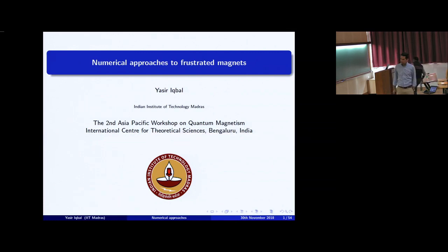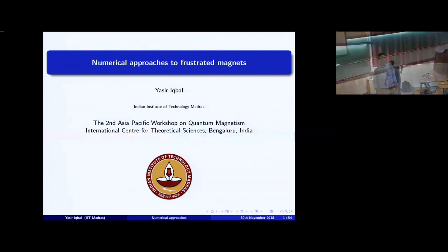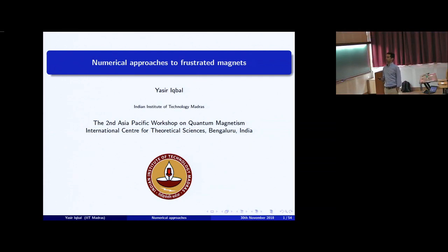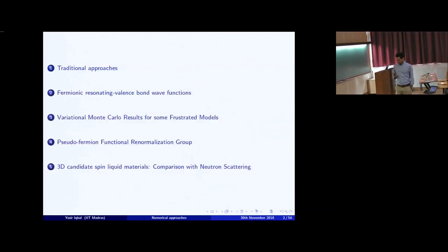I will continue on the note where Arnab left in his very nice lectures about the different methodological approaches one can take to address the low energy properties in the strongly frustrated regime of many magnetic Hamiltonians, which are thought to describe either interesting physics on their own or have material applications, and therefore would permit a good synthesis between experiment and theory. I'll start by having a slide or two on traditional approaches — what people used to do in the good old days and what are their limitations.